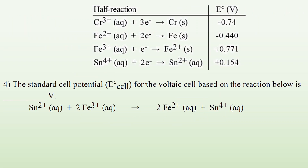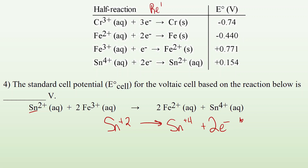Number 4: the standard cell potential for the voltaic cell based on the reaction below. We can go back to that equation, but I go, let me see what's going on. I got Sn²⁺ becoming Sn⁴⁺ — it must have lost 2 electrons. So I look for this reaction, but all of these are for reduction, and what I just wrote is an oxidation. I look for the opposite of that and find it here. Normally for reduction this is the voltage, 0.154. But since I'm doing the opposite process, it becomes negative 0.154.